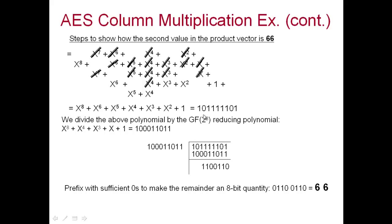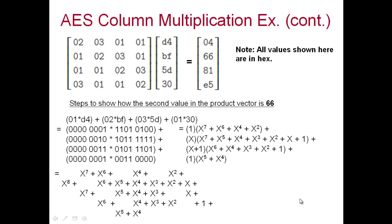After prefixing a zero to make 8 bits, we get 0110 0110, where the upper nibble is 6 and the lower nibble is 6, confirming the result is 66 in hexadecimal. This is the mixed column step, and for decryption we use the inverse matrix instead.